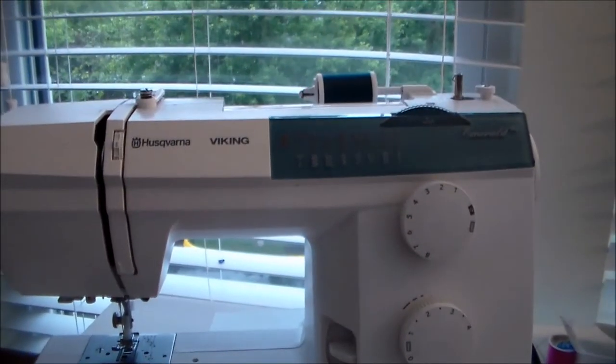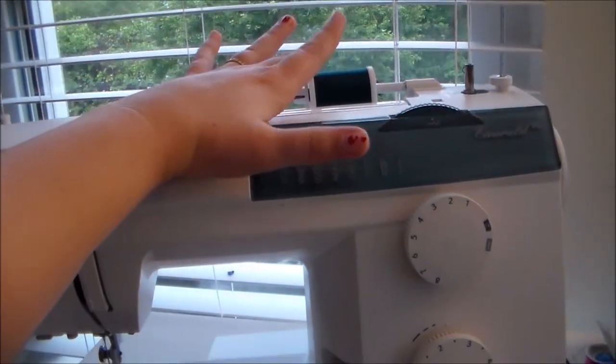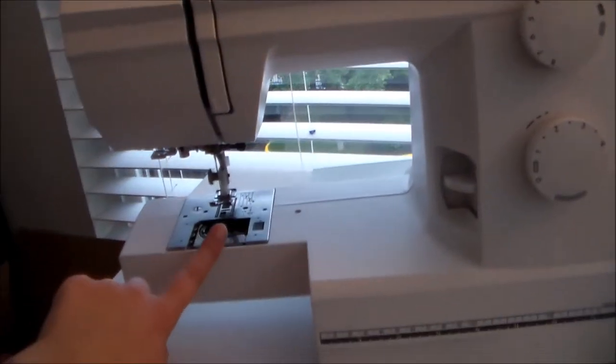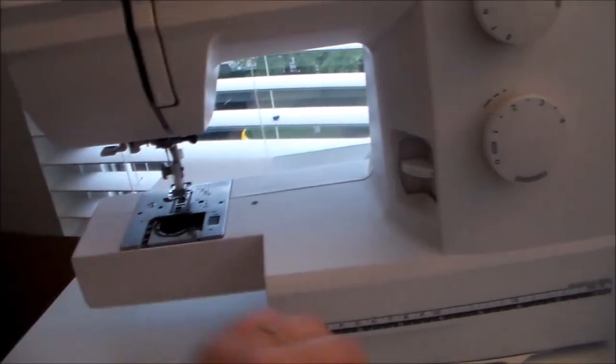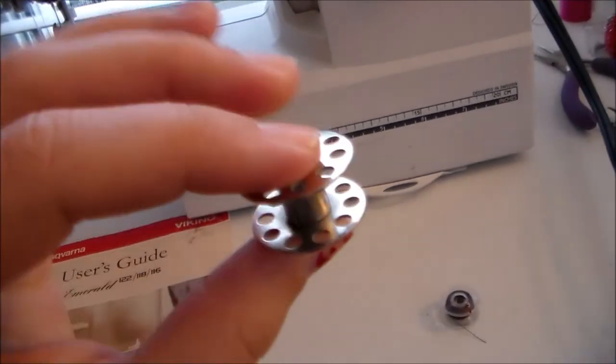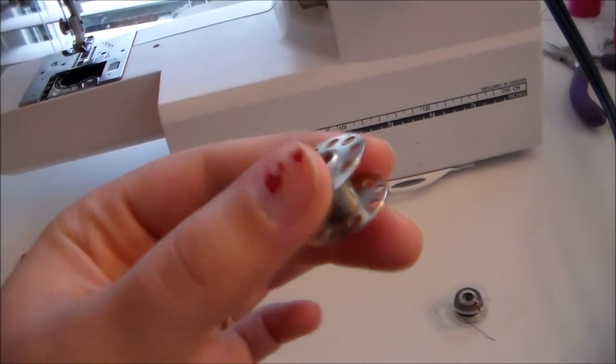When the thread is on the machine you have your thread coming from the top of the machine, and then you have a secondary place where the thread comes from underneath. That thread is going to be wound onto a smaller spool called a bobbin.